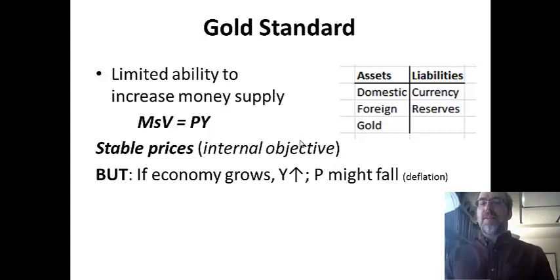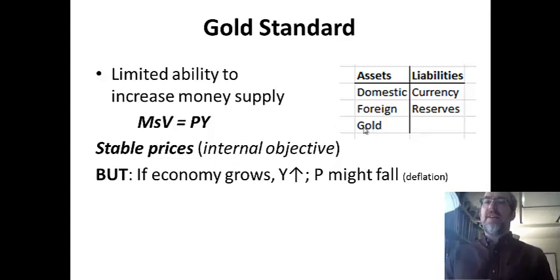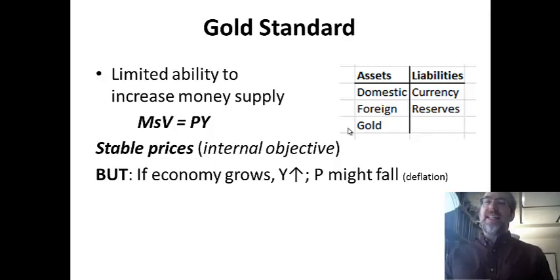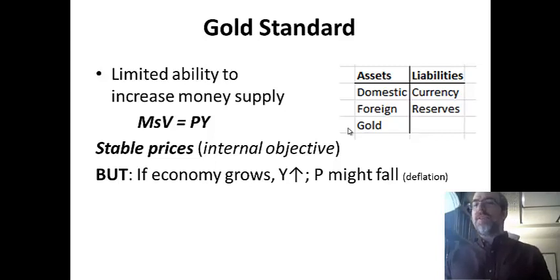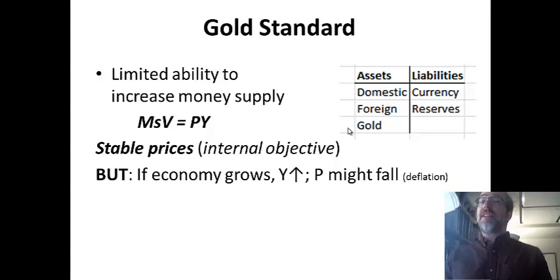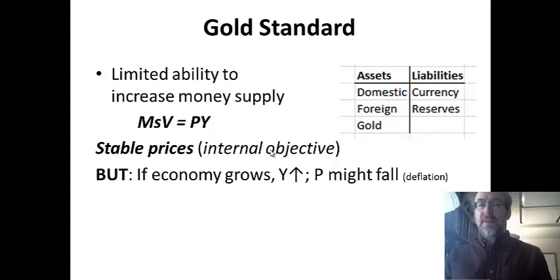If you want stable prices — an internal objective for the country — and people like order and stability, then linking the money supply to something that cannot easily be created limits the government's ability to create money. Gold can only be mined and shipped over; it can be acquired through exports and imports or people turning in jewelry. Countries have a little control over it, but it's not as expandable as just printing pieces of paper.